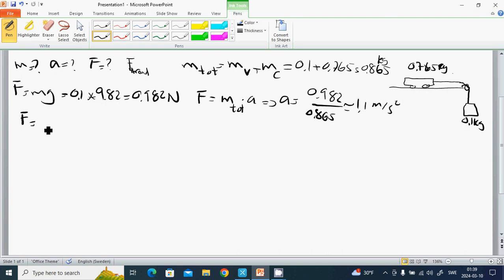And the kraft of the van, of the thread, it is M car times a, which is 0.765 multiplied by 1.5, so it is almost 0.875 newtons.